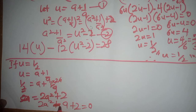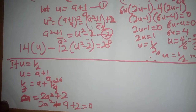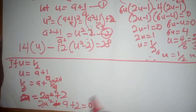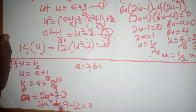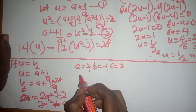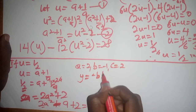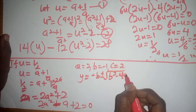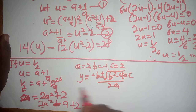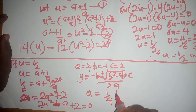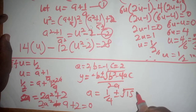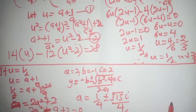We solve 2a² - a + 2 = 0 using the quadratic formula, where a = 2, b = -1, c = 2. Applying the formula, we get a = (1 ± √(1 - 16)) / 4 = 1/4 ± (√15 · i) / 4. That is the value of a when u = 1/2.